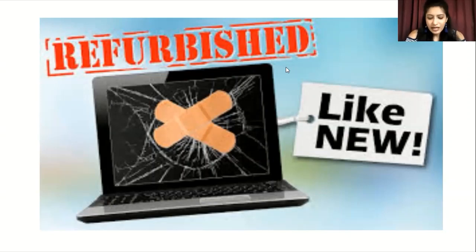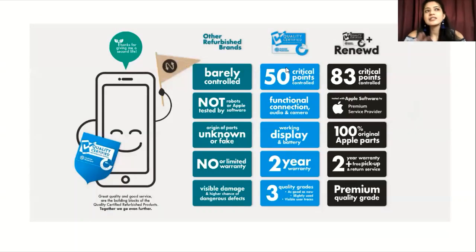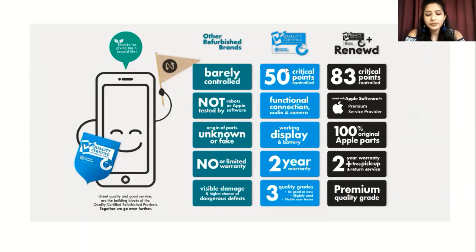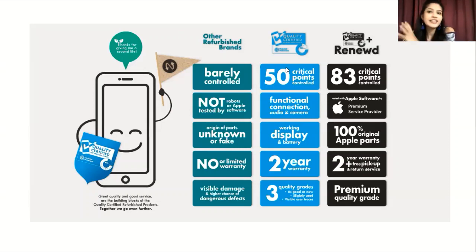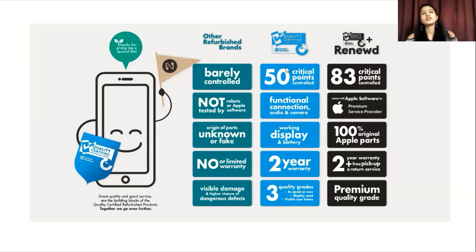Refurbished products are no different from brand new products. They vary only in market price or usage history. Brand new products go directly from the company to the user, while refurbished products go from the company to one user, then to an agency, and then to a new user. They are quite similar in functionality, structure, and everything else.